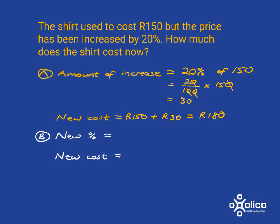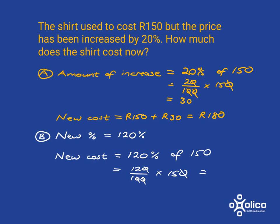The second method is quite interesting. The whole price of the shirt is 100% of the shirt, and if it increases by 20%, the new percentage is going to be 120% of what we started with. So all we have to do to get the new cost is work out 120% of 150. That's 120 over 100 multiplied by 150 — let's do a bit of cancelling to make things easier. We've got to do 12 times 15, and we get 180, so the new cost is 180 rand.